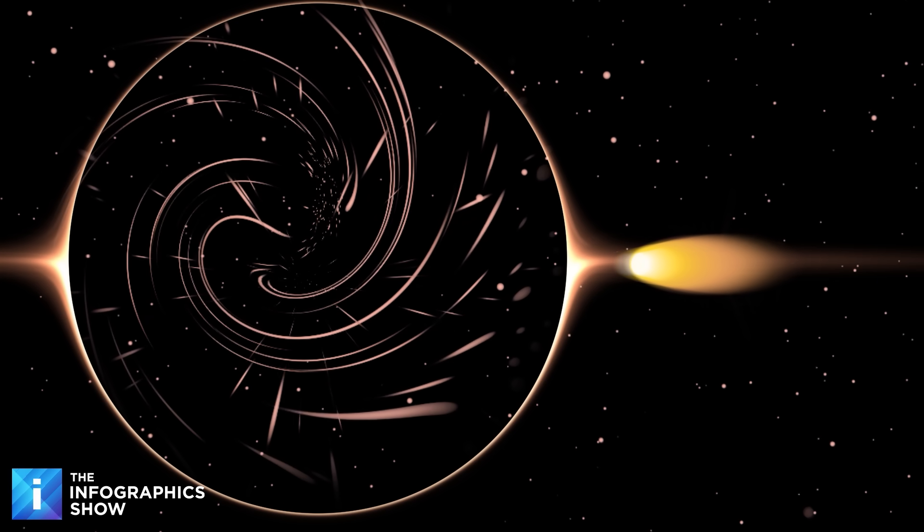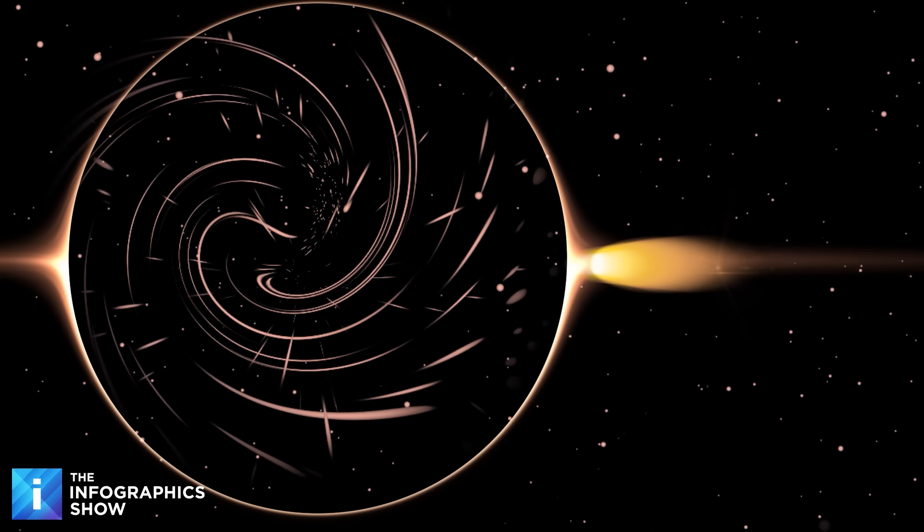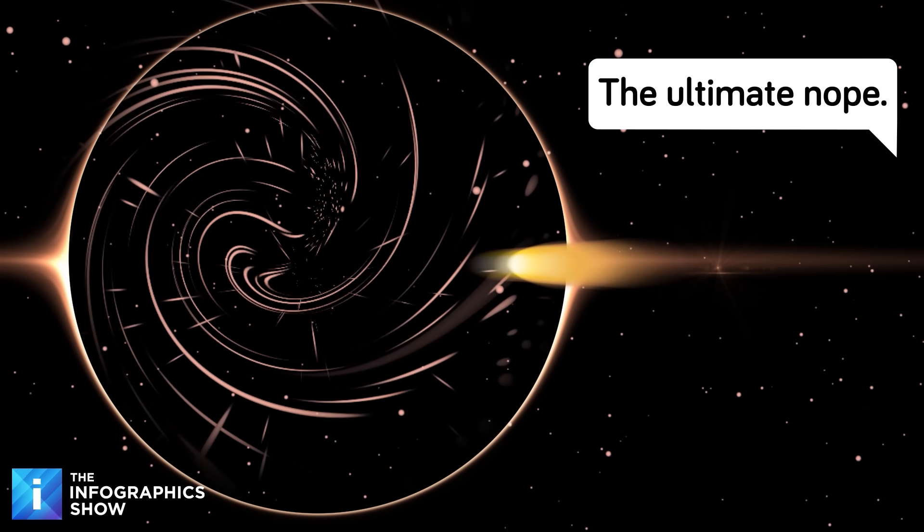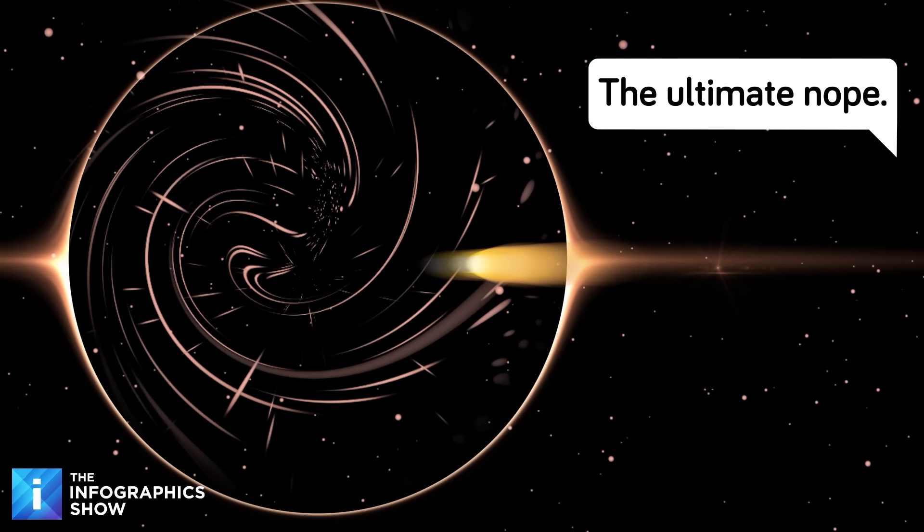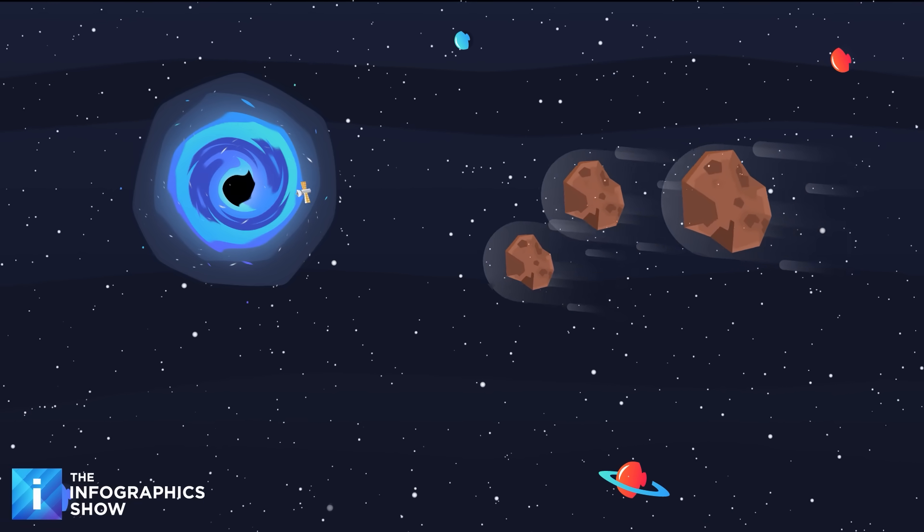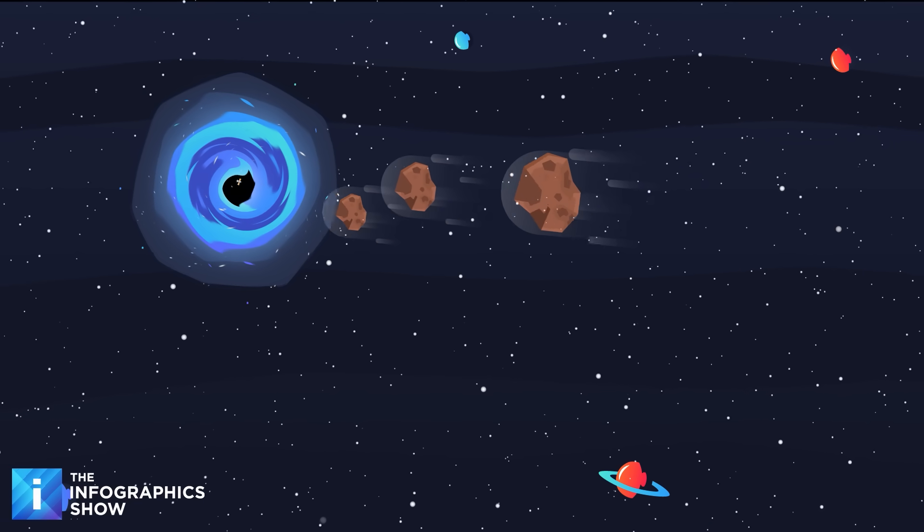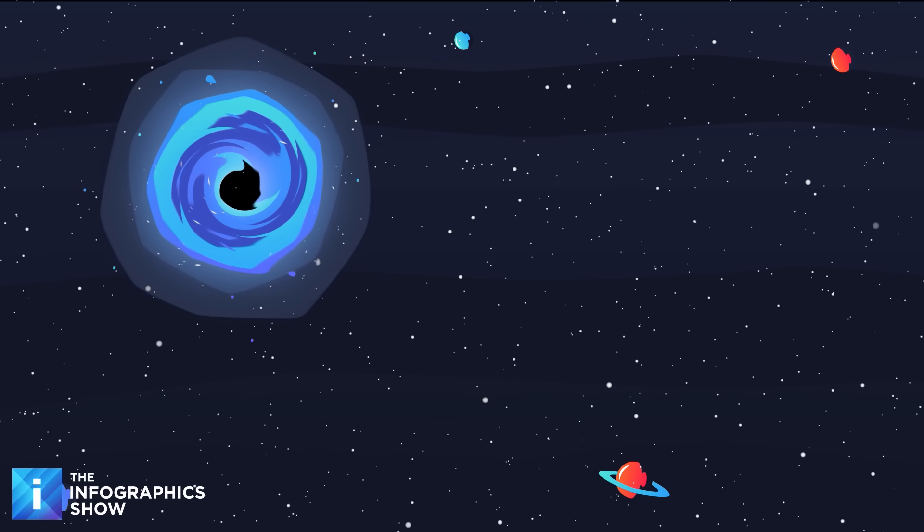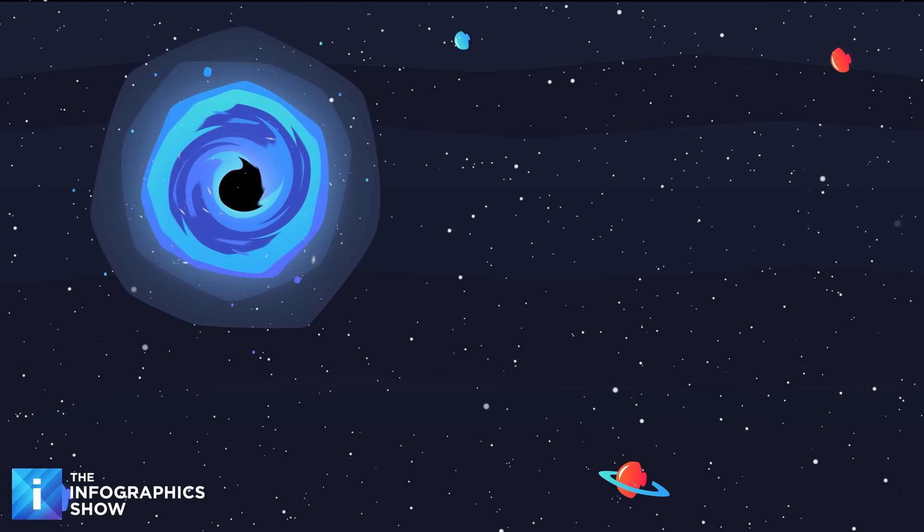Some might be smaller than atoms, but weigh as much as asteroids. Others could be drifting through our solar system right now completely invisible and instantly lethal to anything that strays too close. What makes black holes so terrifying is that they almost never lose weight. Every piece of matter that falls in just makes them bigger and more dangerous. And worst of all, they are incredibly patient.